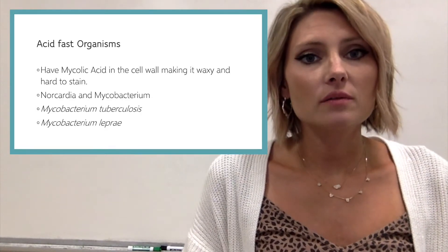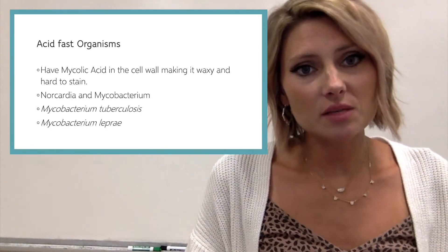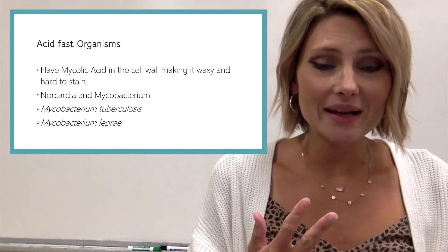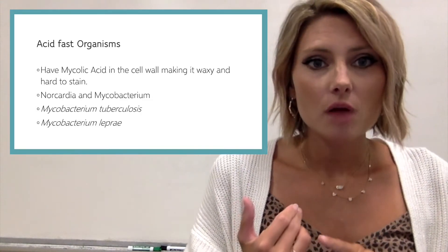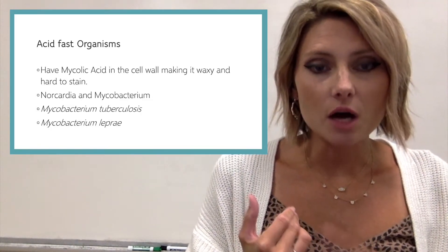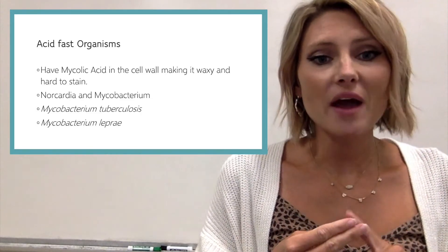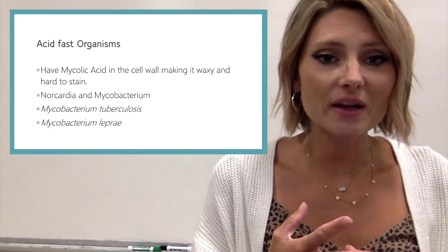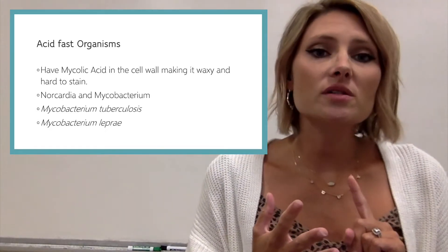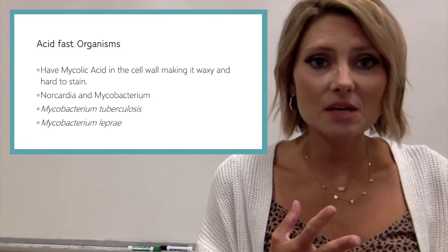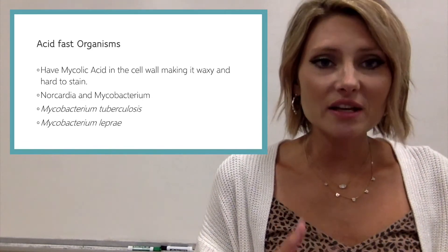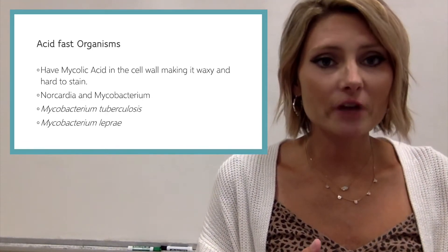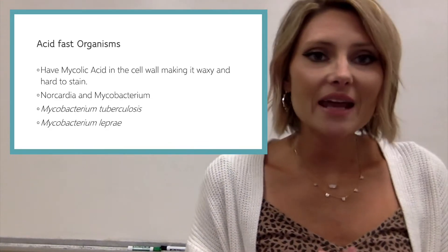Examples of acid fast organisms come from two families: Nocardia and Mycobacterium. Nocardia is really not as prevalent as Mycobacterium, which is the one you're going to see in a clinical setting. The two pathogenic strains mentioned in your lab manual are Mycobacterium tuberculosis and Mycobacterium leprae.